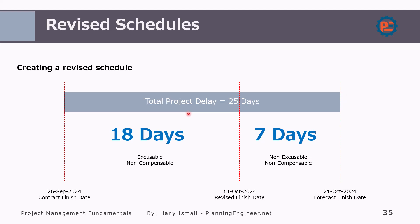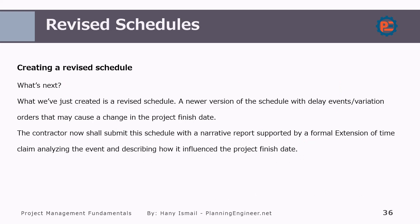So this, in simple terms, is the revised schedule and the recovery schedule which we discussed in the previous lesson. Some people are confused because sometimes they call it revising the schedule with the same completion date, but this is not common practice. Usually the revised schedule will have a new completion date, and it is the result of some changes, some suspension periods, some actions by the client, or some actions beyond the contractor's control — like force majeure, for example, which suspends the project for a period. Now we have created the revised schedule — a new version of the schedule with the delay event, a variation order that may cause a change in the project finish date. The contractor shall submit this schedule with a narrative report and a formal extension of time claim, which also has components we will discuss later on.